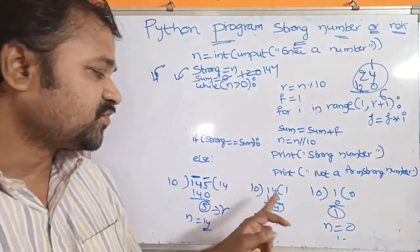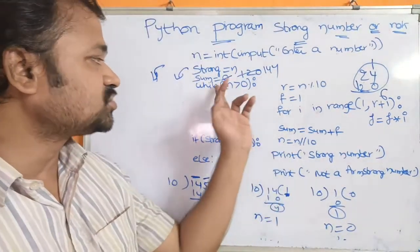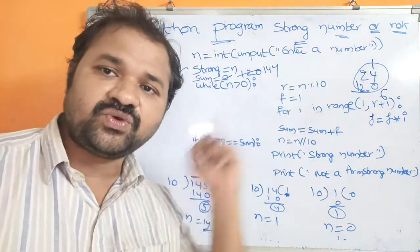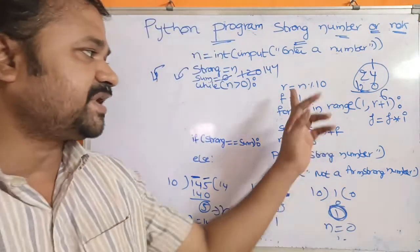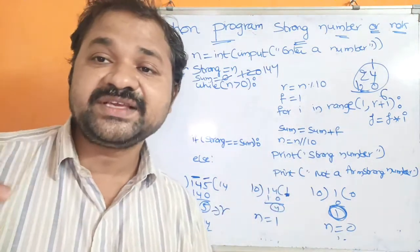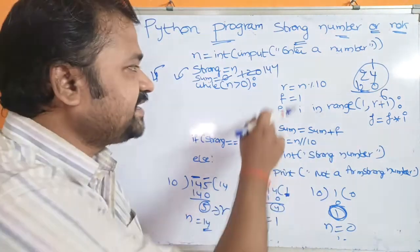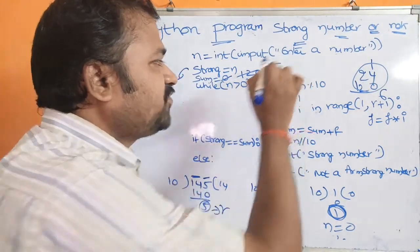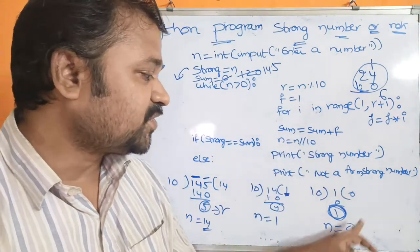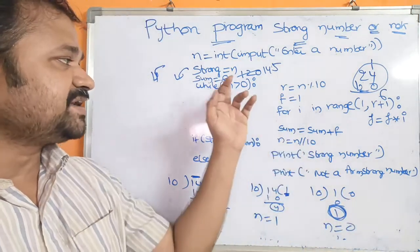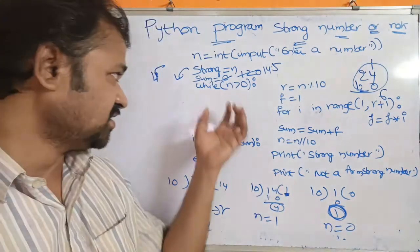Next, n = n // 10 = 14 // 10 = 1. Control returns to the while loop. 1 > 0, condition is true. r = 1 % 10 = 1. The result of 1 factorial is 1, so f = 1. sum = sum + f = 144 + 1 = 145. Now sum contains 145. Then n = 1 // 10 = 0. Control returns to the while loop: 0 > 0 is false, so the loop exits.